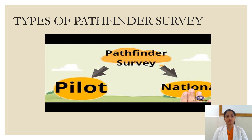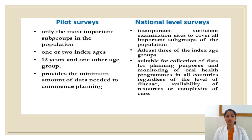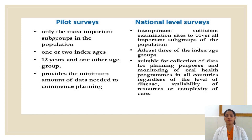There are two types of Pathfinder survey: Pilot survey and National Pathfinder survey. In Pilot surveys, only the most important subgroups are taken into account — usually one or two index age groups, such as 12 years and one more. It is useful for calculating only the minimum amount of data required to plan a survey. National level surveys are very large — they include three or more index age groups and are suitable for collecting large amounts of data for planning purposes and monitoring oral health programs in the country.